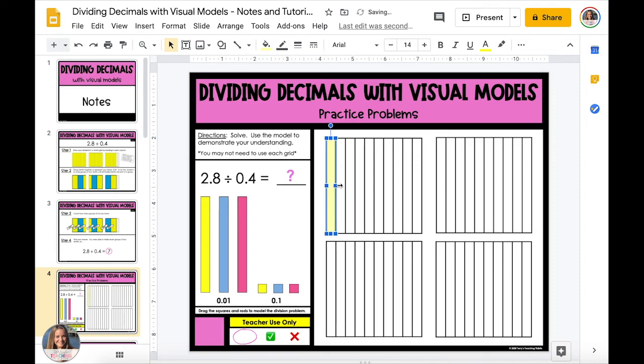Each column is worth one tenth of the whole. So to show 2.8, we're going to fill in two whole boxes and eight tenths of the third box. The quickest way to do this is to drag one of the colored rods from the side and drag the edge of it so that it covers the whole thing.